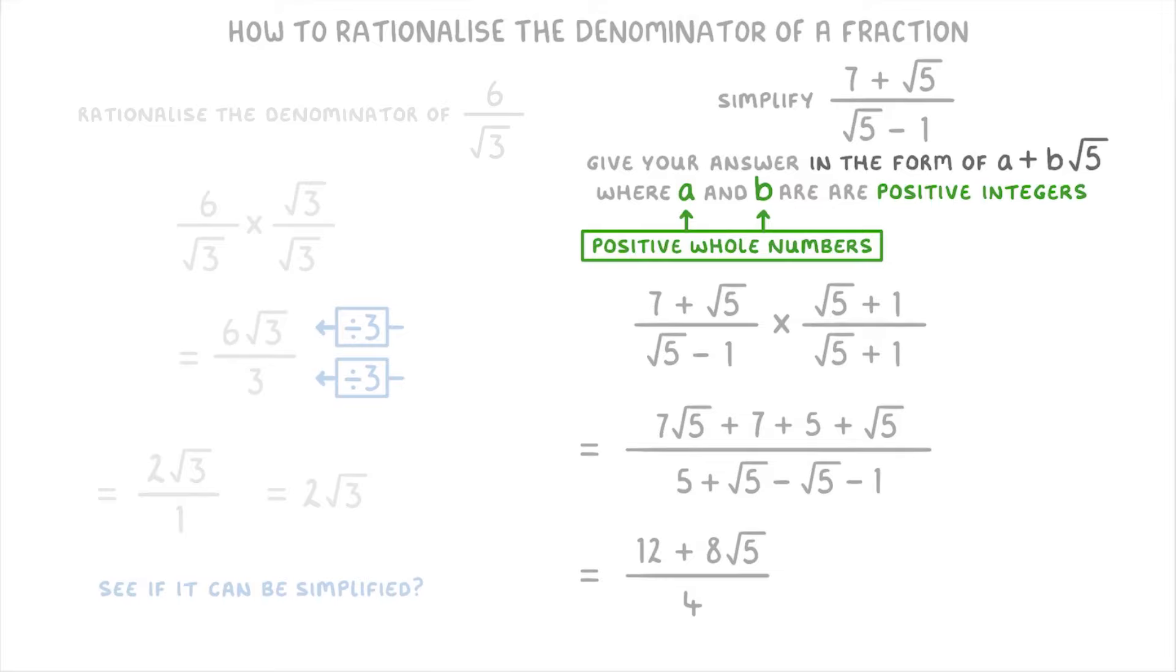And then you can simplify the whole thing by actually dividing the numerator by this 4. To give us 3 plus 2 root 5 as our final answer. And that's already in the form of a plus b root 5, like they asked us for.